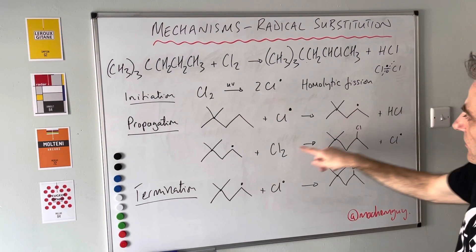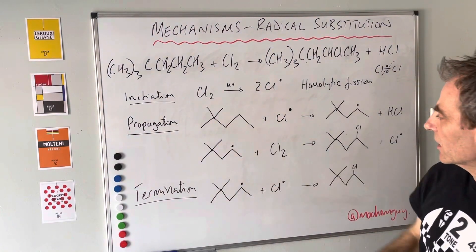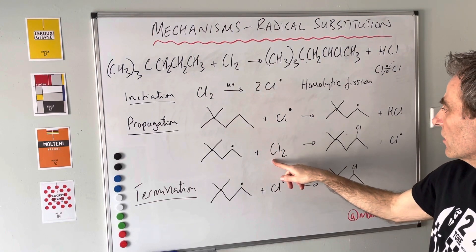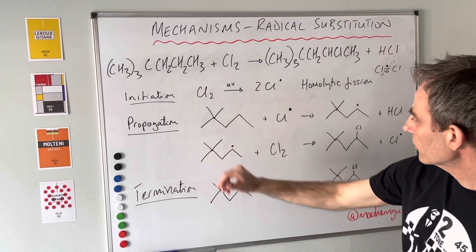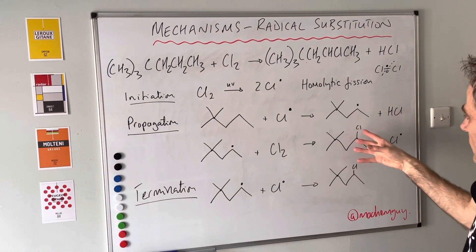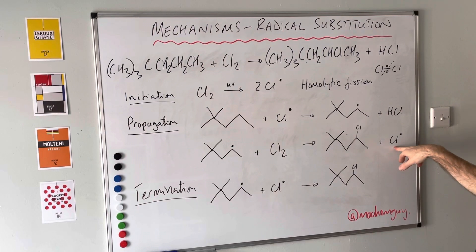That free radical feeds into the second propagation step. It reacts with a chlorine molecule, which takes a chlorine and the electron and forms this molecule here. That's the final product, and we get a chlorine radical produced as the other product.